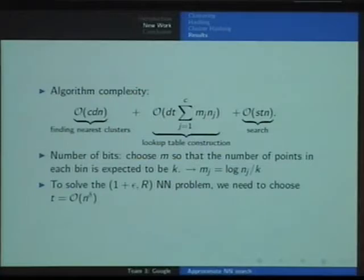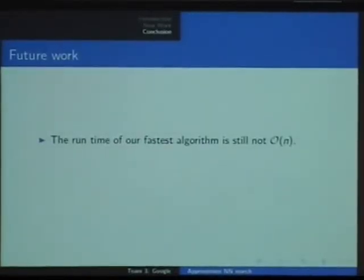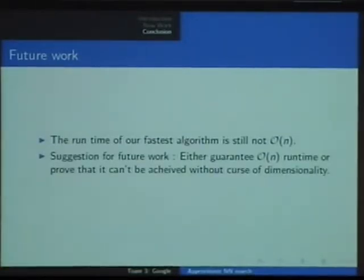Now, to solve the 1 plus epsilon R NN problem, we need to choose tables of order N to the delta. We're thinking about doing some future work about that. Now, we can either find a faster algorithm using different methods. So we don't want to compare two points anymore, because we don't think that will work. But what would happen if we can take sets and compare sets itself? It's just an idea, and we didn't formalize it yet. Or maybe prove that it's not possible to do it. We don't know yet. And see if that can be achieved without the curse of dimensionality. You can always read our report, and have fun. All right. Thank you.